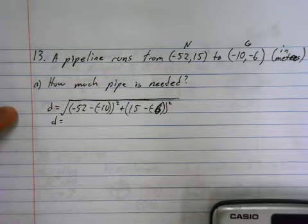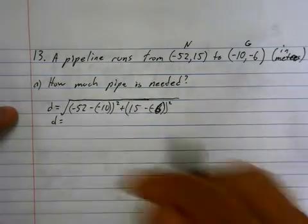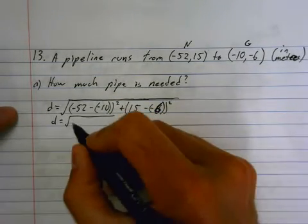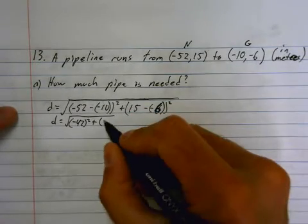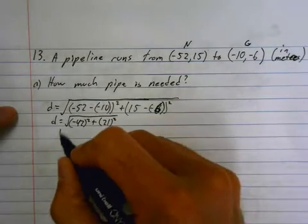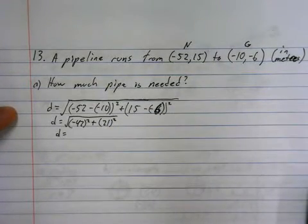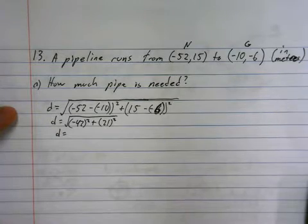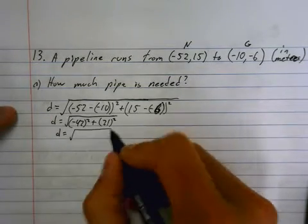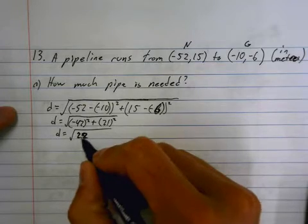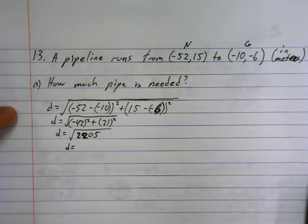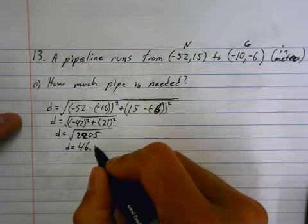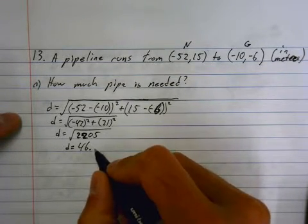So negative 52 plus 10 is root 42. Sorry, is negative 42. Negative 42 squared plus 21 squared. Distance is going to equal, so 42 squared plus 21 squared is the square root of 2,205.